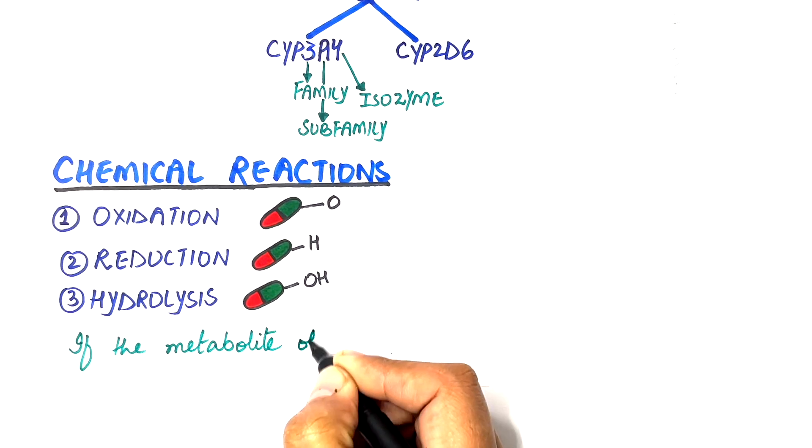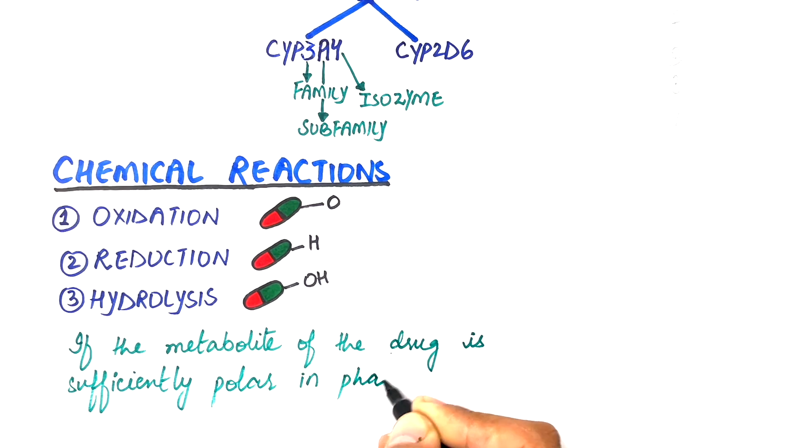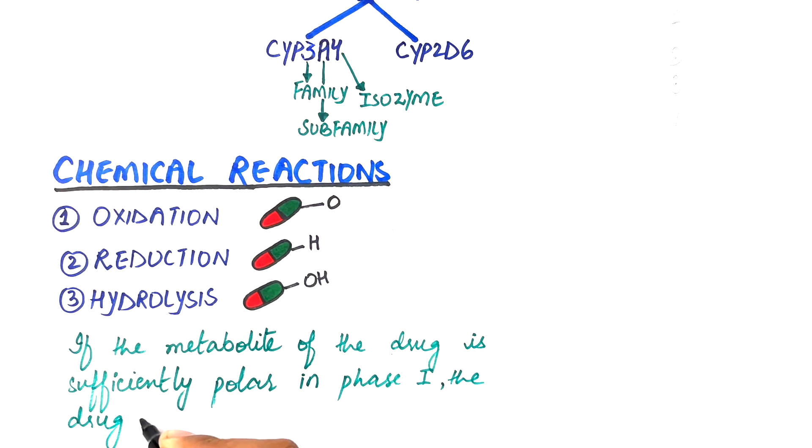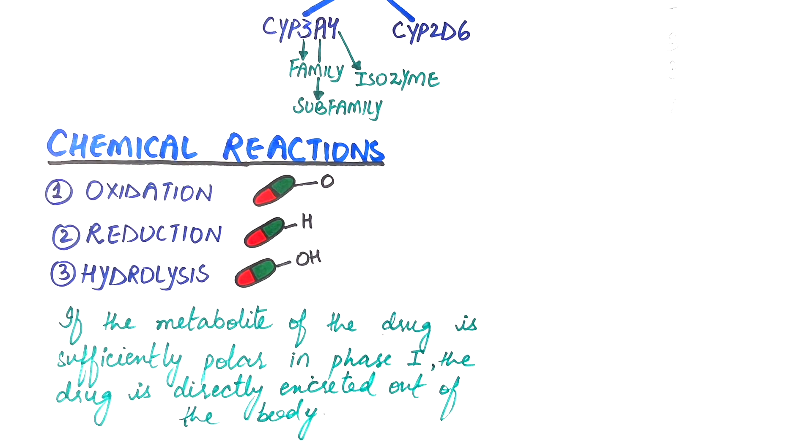If the metabolite of the drug is sufficiently polar in phase 1, the drug is directly excreted out of the body without going through phase 2 metabolism. However, if it isn't sufficiently polar, it will then have to go through phase 2 metabolism.